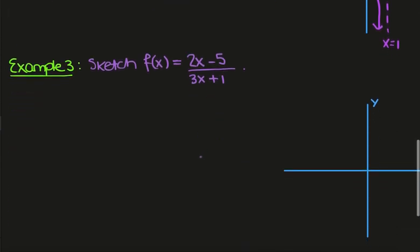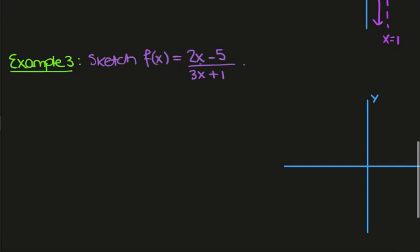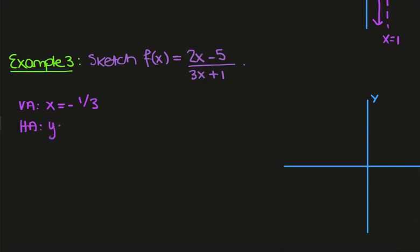One last example: sketch f of x is equal to 2x minus 5 over 3x plus 1. This is a hyperbola in a slightly different form. You can use polynomial long division to get it into the usual form. The vertical asymptote is still given by setting the denominator equal to 0, so x equals minus 1 third. For the horizontal asymptote, we take the ratio of the leading coefficients of x, giving y equals 2 thirds. The y intercept is found by setting x equal to 0, giving minus 5.